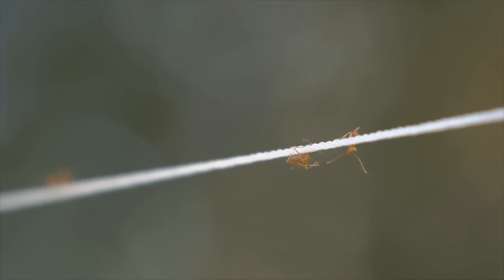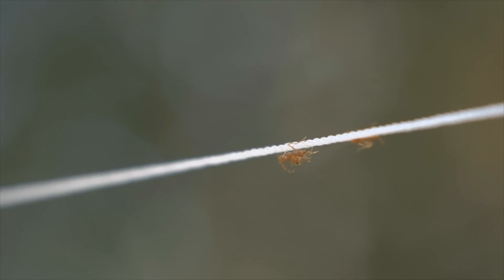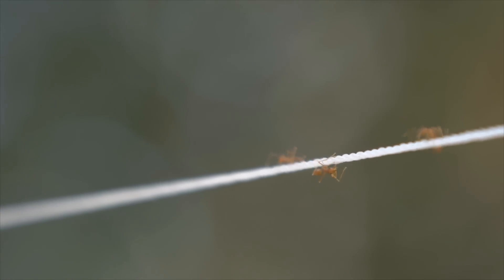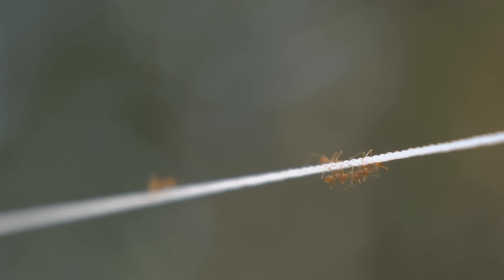However, an ant on the same rope can not only move forward and backward, it can move around the rope itself. The second dimension is around the circumference of the rope, and it is much smaller than the long dimensions to which the tightrope walker has access.